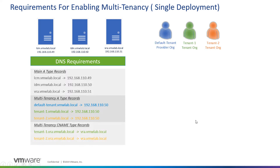On the VRA side, we create multi-tenancy CNAME-type records specifically for tenant-1 and tenant-2. We use the VRA namespace in the single deployment — the main FQDN of the VRA appliance — and define tenant-1.vra.vmwlab.local and tenant-2.vra.vmwlab.local, pointing them to the main FQDN of the VRA appliance: vra.vmwlab.local.